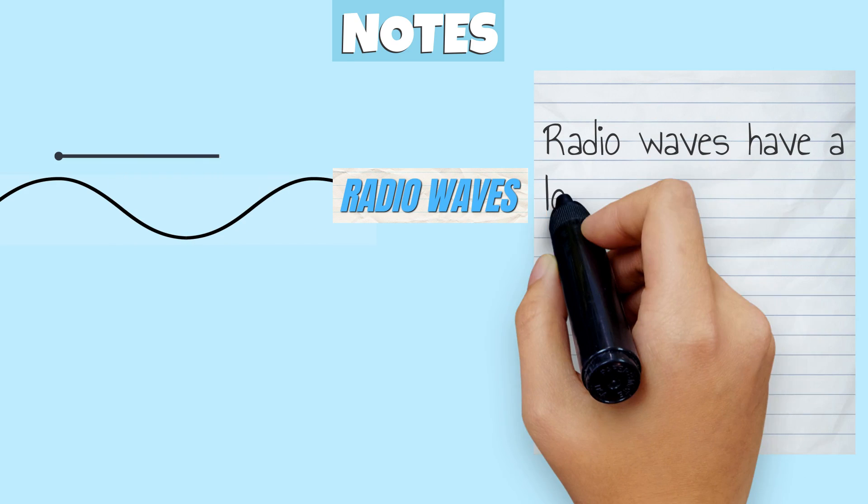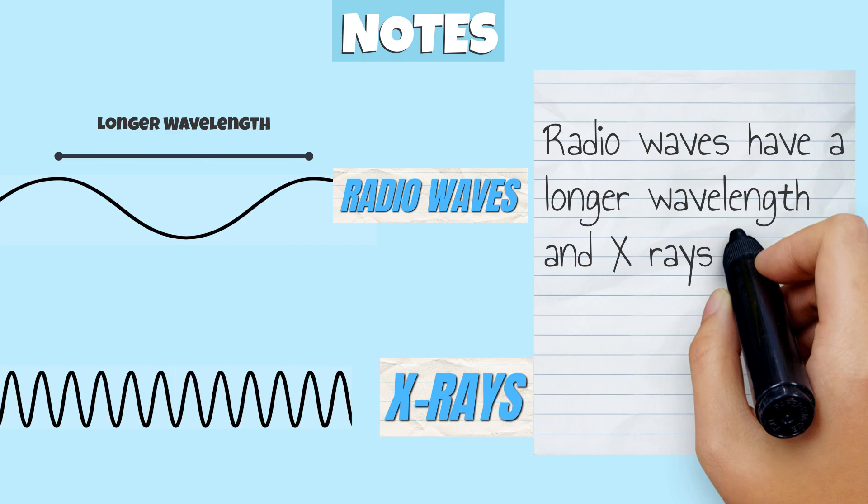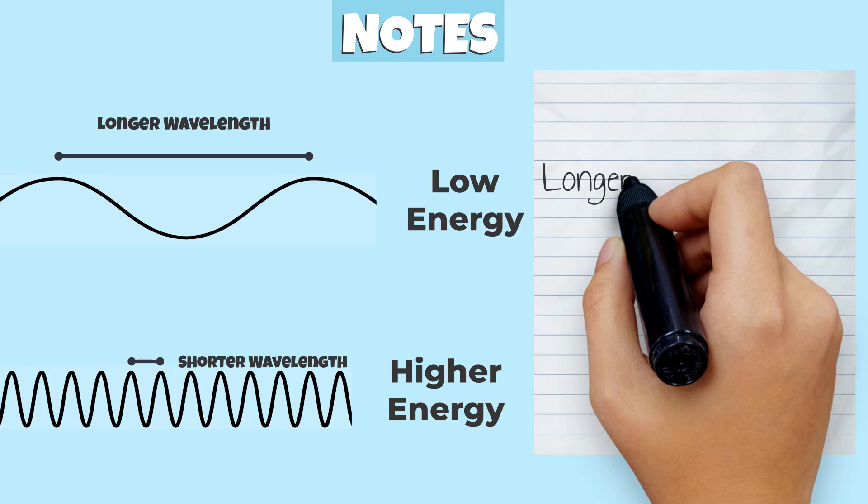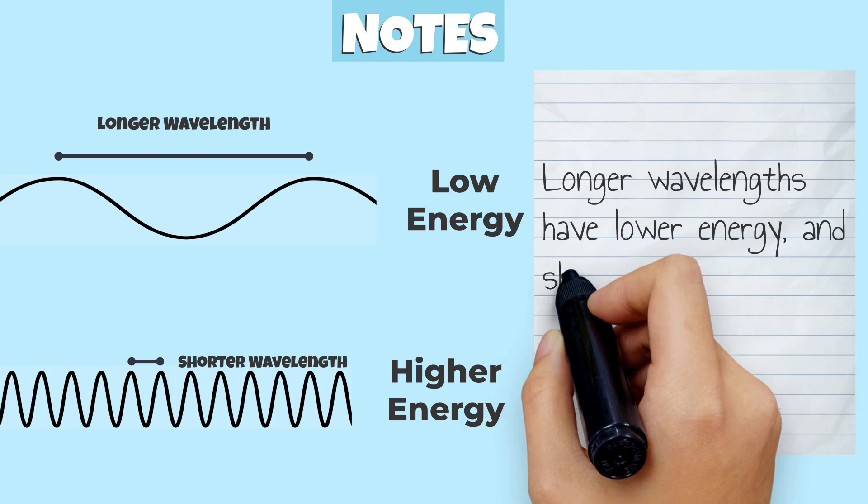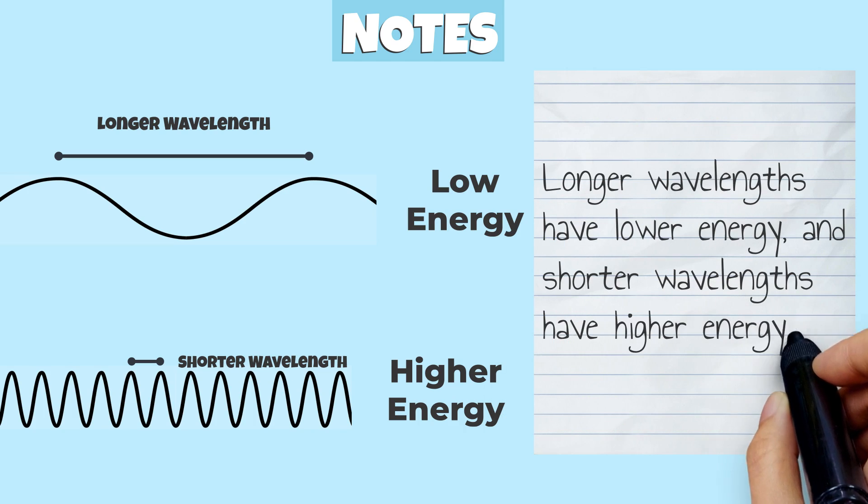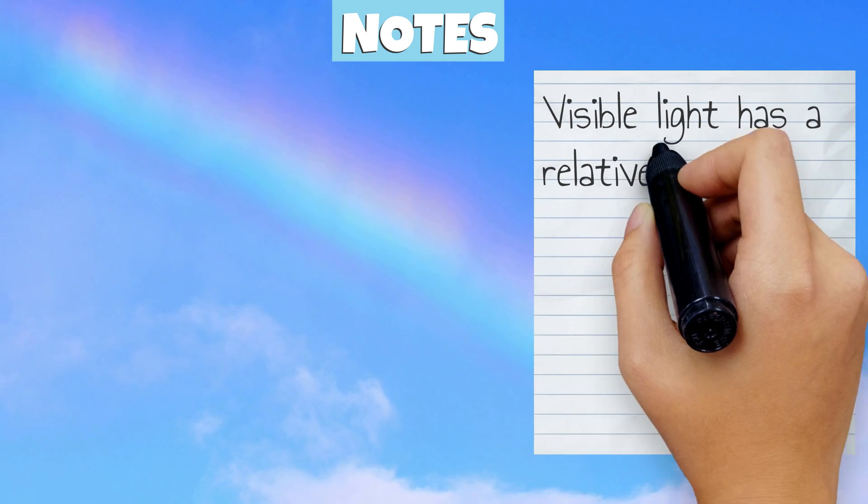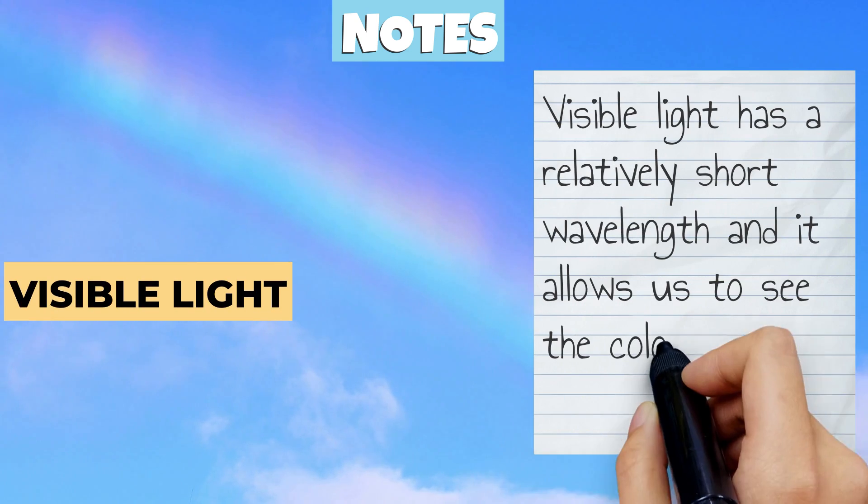Radio waves have a longer wavelength and x-rays have a shorter wavelength than visible light. Longer wavelengths have lower energy and shorter wavelengths have higher energy. Visible light has a relatively short wavelength and it allows us to see the colors of the rainbow.